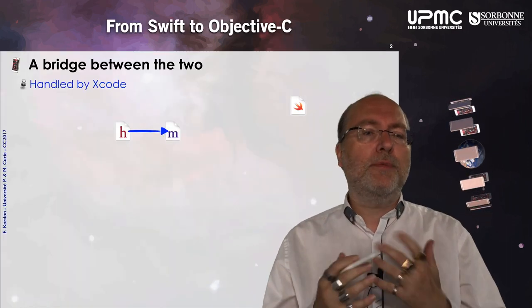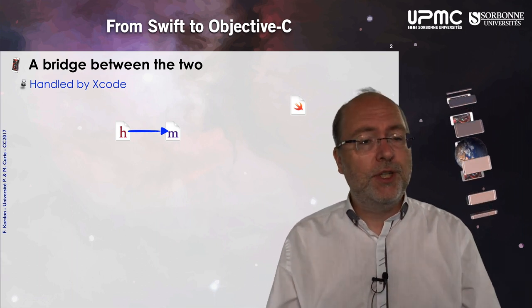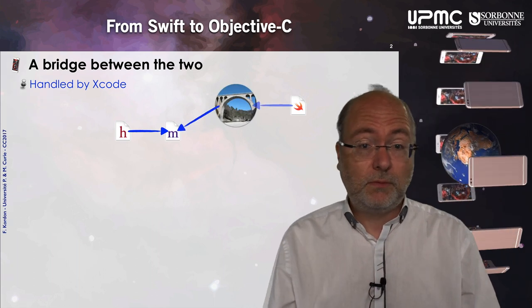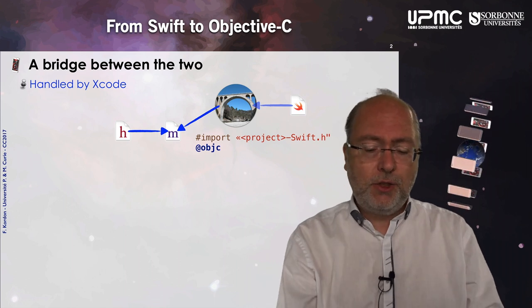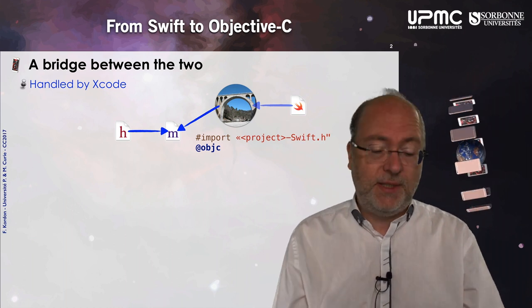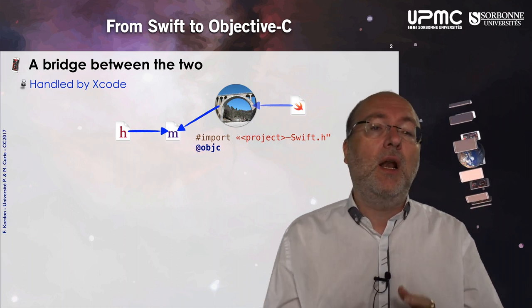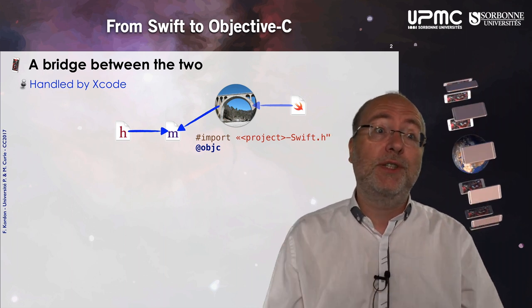Hi everybody. In this video I will present how we use a Swift class from an Objective-C project. From Swift to Objective-C as well as the other way, there is a bridge that is handled by Xcode, and this bridge is automatically generated thanks to several directives. You have to do some imports — something that is implicit — and you have to declare somewhere in your Swift file that you will also export an Objective-C-like interface.